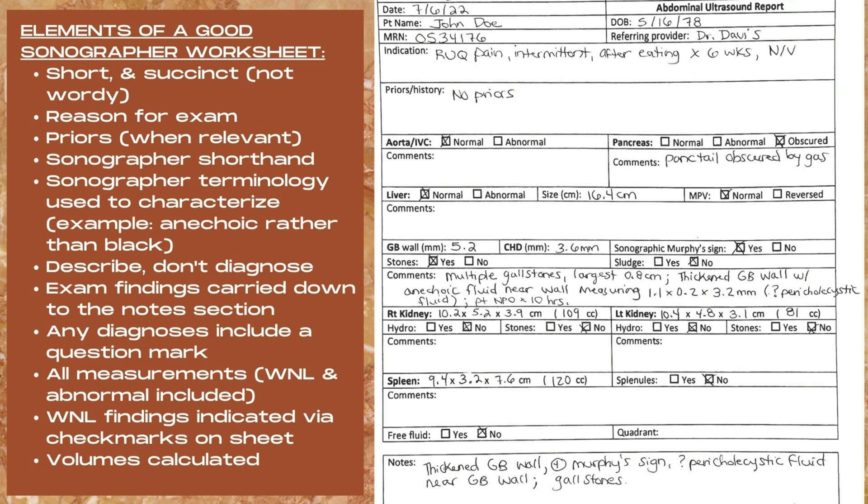There are some common things like gallstones and simple cysts where it is okay to use a diagnostic term rather than a characterizing term. In this example, the comments for the abnormal findings say: multiple gallstones, the largest measuring 0.8 centimeters; thickened gallbladder wall with anechoic fluid near the wall measured in three dimensions; and question pericholecystic fluid. The patient was NPO times 10 hours.